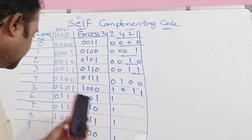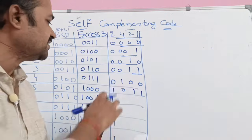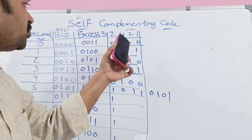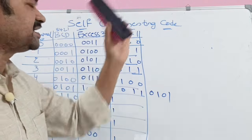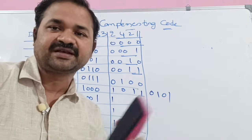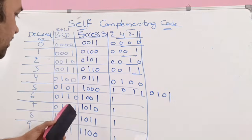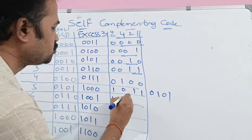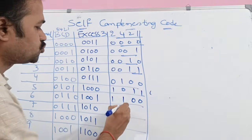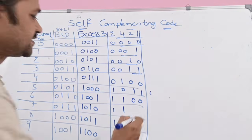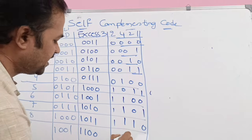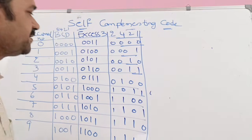In the most significant bit position, if we want to prove 2421 as a self-complementing code, the most significant bit for 5 must be 1. Although we could also write 5 as 0101, to maintain the self-complementing property we use 1011. For 6, 6 means 2 plus 4, so the code is 1100. For 7, 7 means 2 plus 4 plus 1 equals 7, so the code is 1101. For 8, 8 means 1110. For 9, 9 means all 1s: 1111.